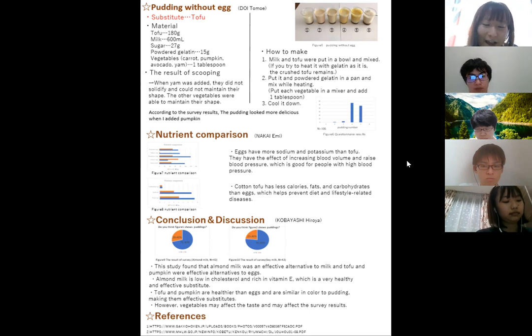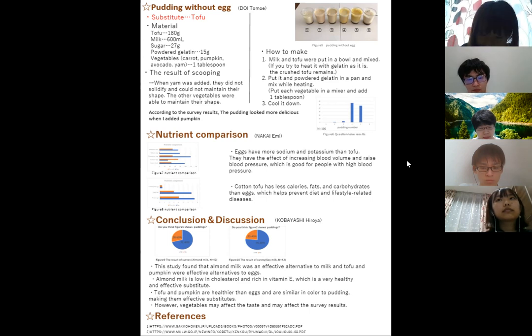Next, I will show you three points of reflection. First, I thought that adding yam would make it even smoother. For this reason, I added yam to number 6, but when the yam was added, they did not set and were unable to maintain their shape. Therefore, number 6 made with yam cannot be eaten as pudding. Other vegetables could keep their shape. Also, number 6 was not delicious when I tried it, so you shouldn't use yam when making pudding.